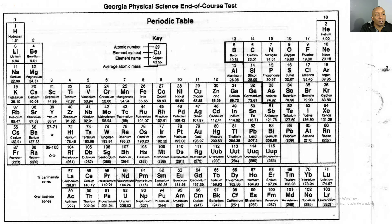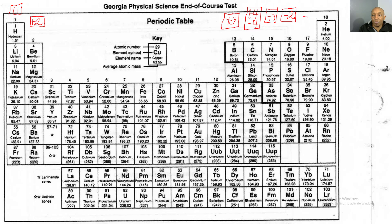Now let's look at our oxidation number or charge. Above where you put your valence electrons, you're going to put your oxidation number with a square around it. Above hydrogen, put a plus one with a square. Above beryllium, a plus two with a square. Above boron, plus three with a square. Above carbon, plus four and minus four with a square. Nitrogen gets a negative three. Over oxygen, a negative two. Over fluorine, a negative one. And then over helium, a zero.